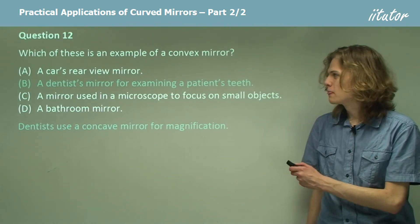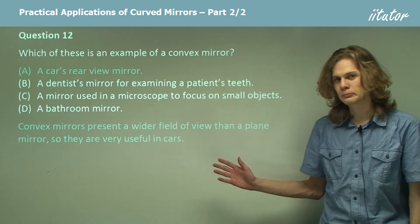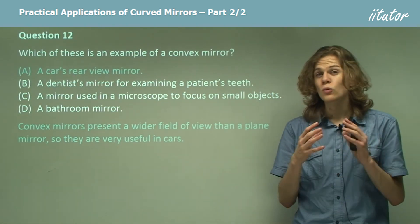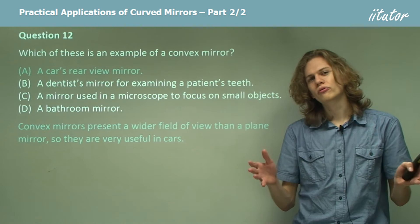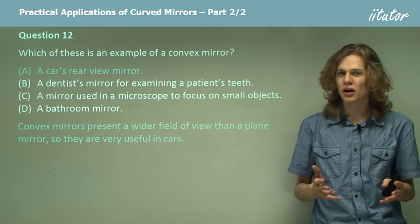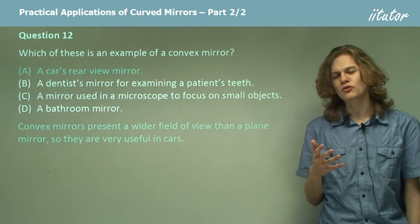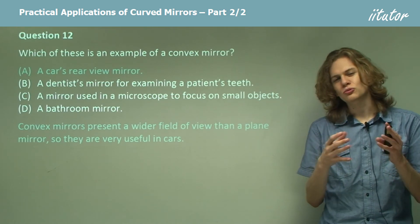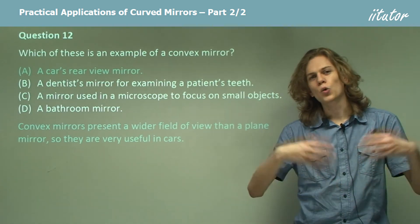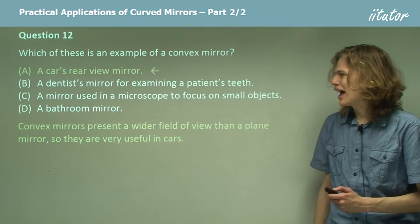Our last option then is A, a car's rear view mirror. And this is in fact the correct answer. Convex mirrors shrink objects, they make objects seem smaller, which means that you can see more of a field of view in the mirror than you can with your normal eyes or with a plain mirror. So if we have a convex mirror in the car's rear view mirror, it means that the objects reflected look smaller, therefore more distant. But it also means that we can see a wider field of view than if we didn't have it. So A is the correct answer.